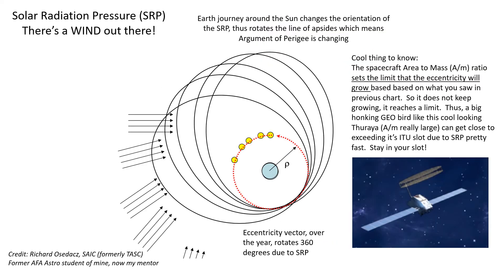What else happens? As we journey around the sun, the orientation of the solar radiation pressure makes the orbit's argument of perigee swivel — the eccentricity vector makes a full 360-degree circle. So we're out of round and our long axis is rotating.